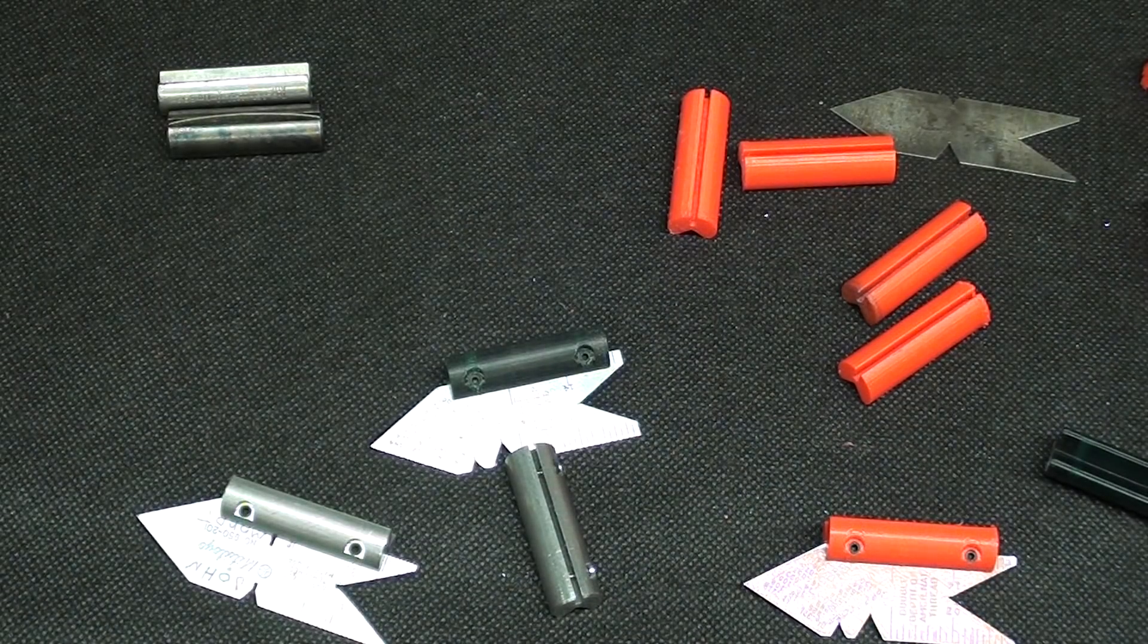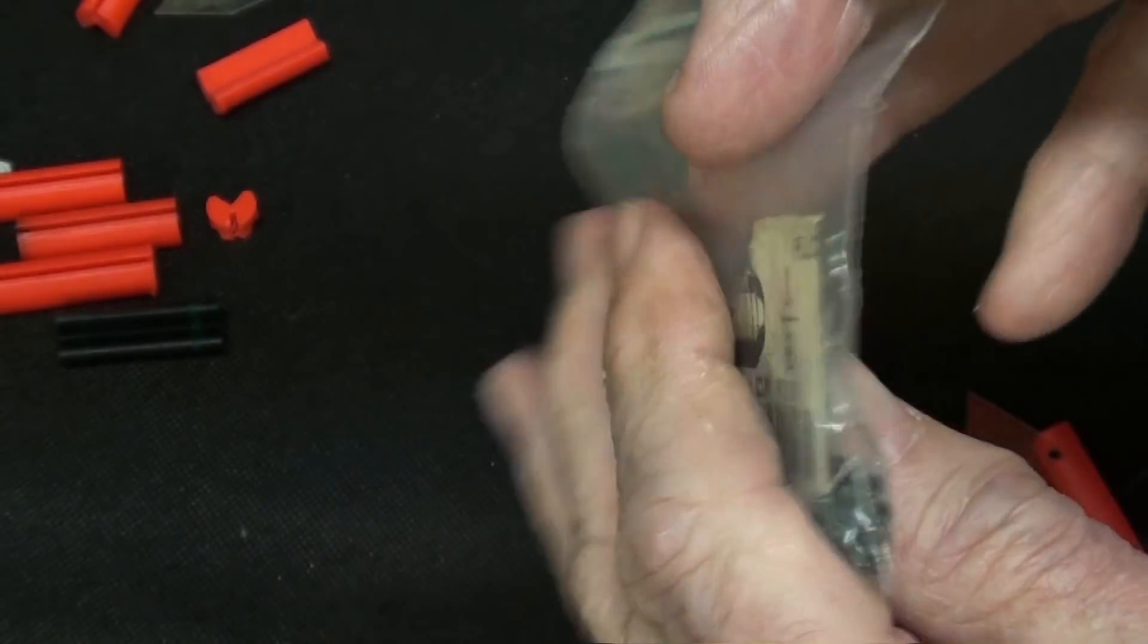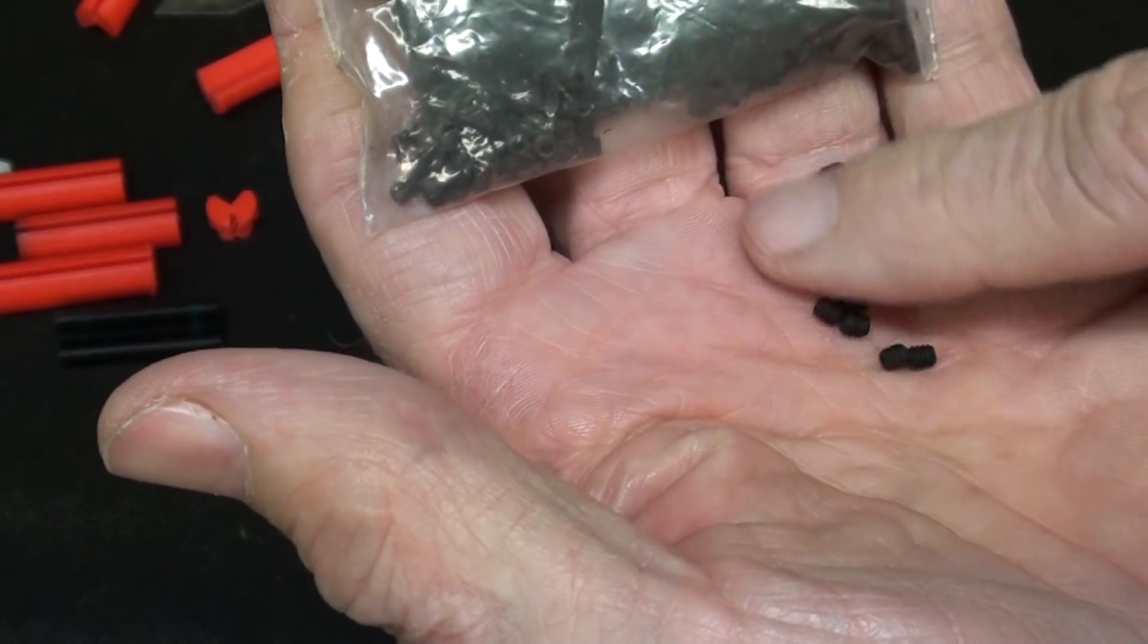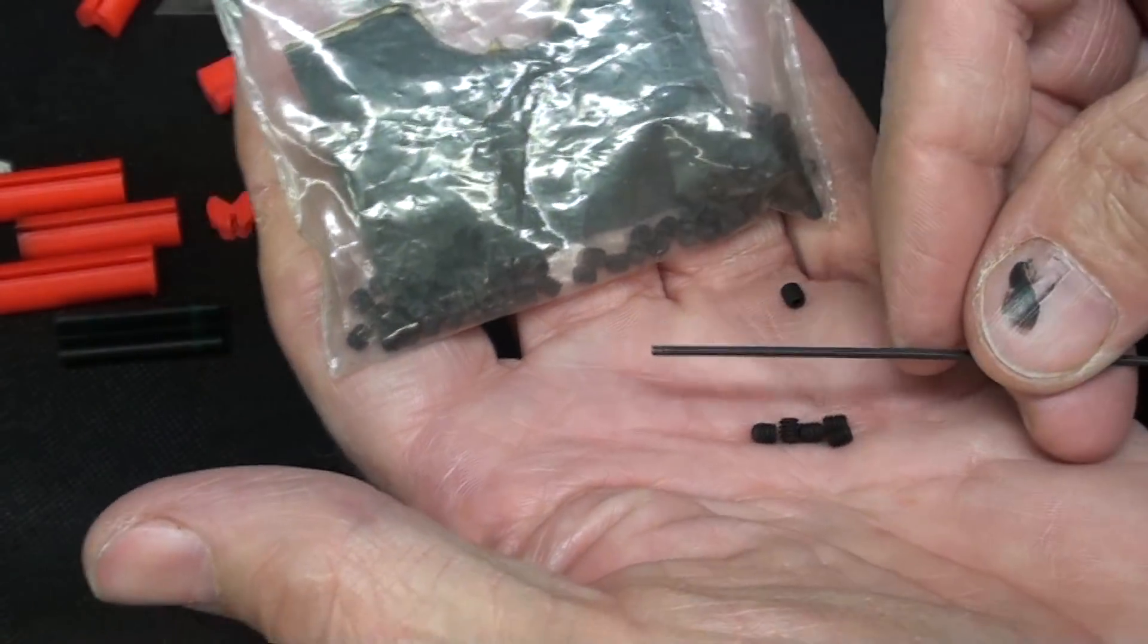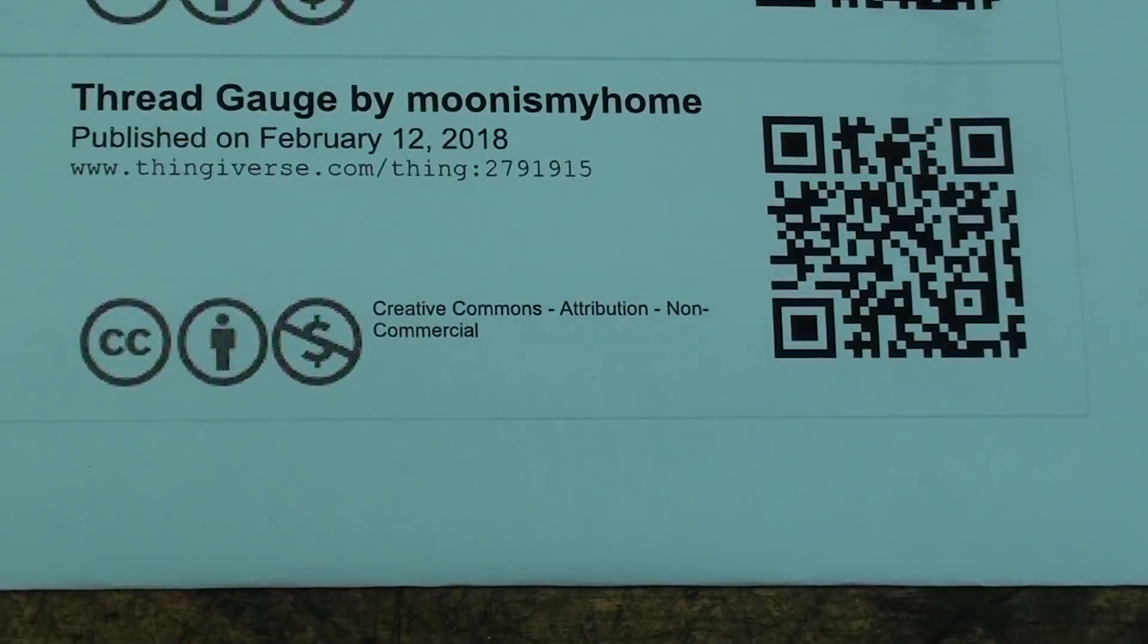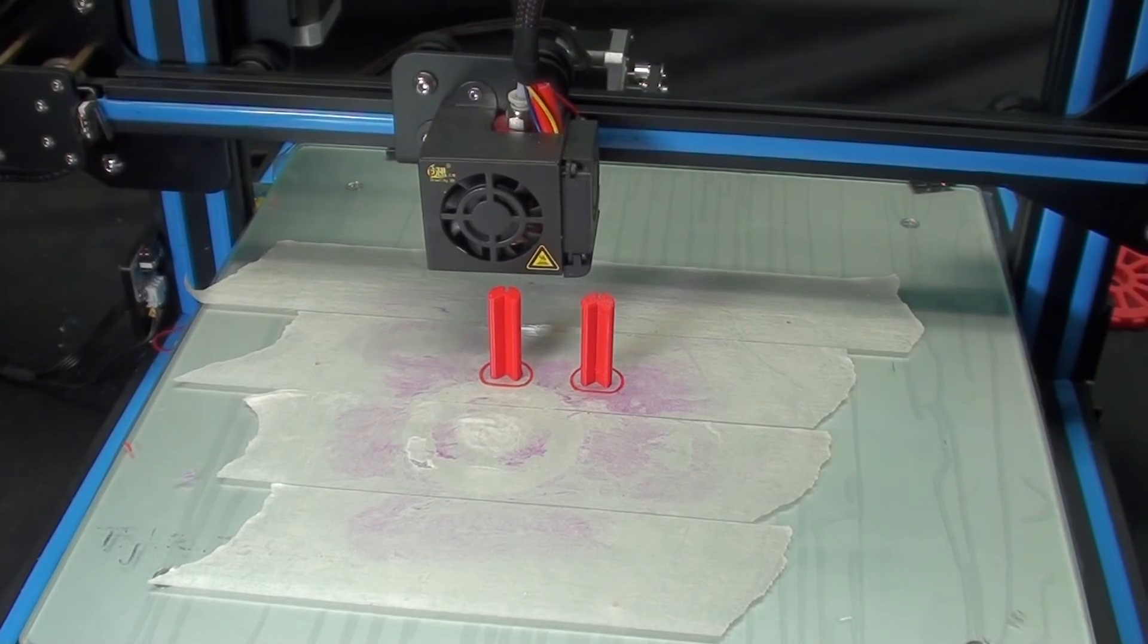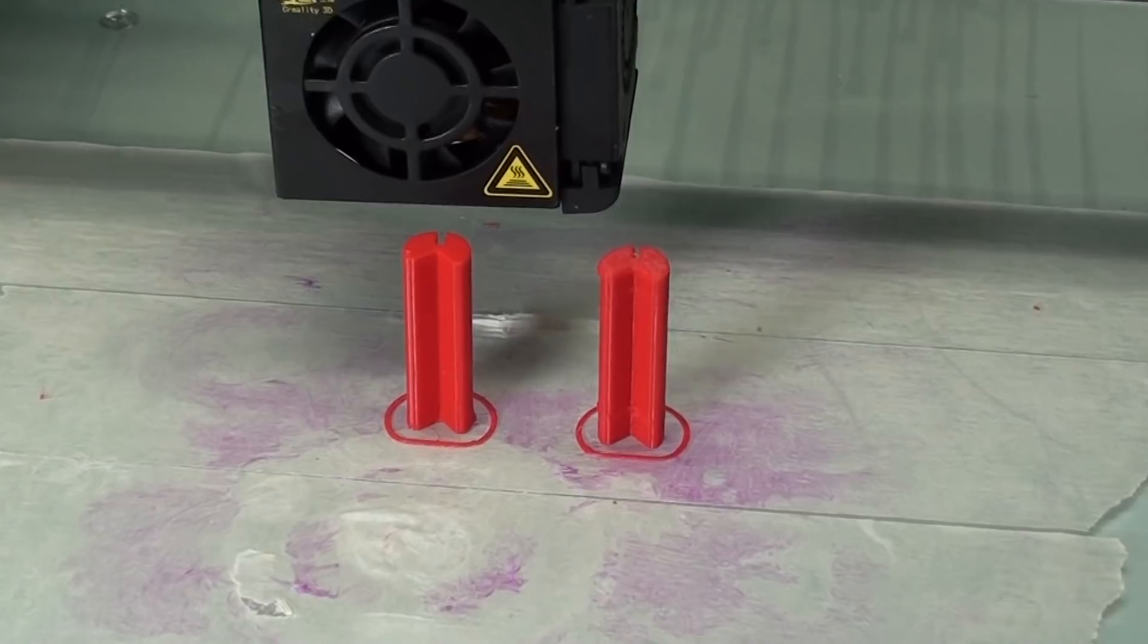Those are 4-40 set screws, and let me show you what they look like because they certainly are tiny. They certainly are little ones, and a very tiny hex key as well. There is the address and the credit required by Thingiverse, and here they are fresh off the printer. You can print several at a time.